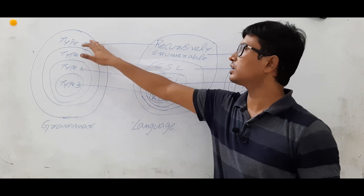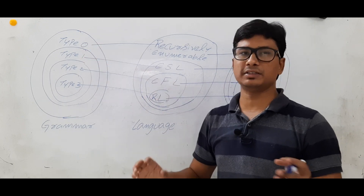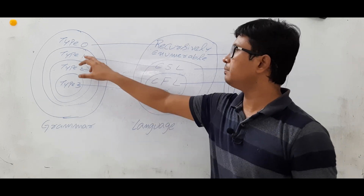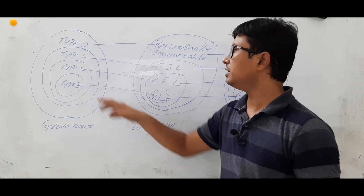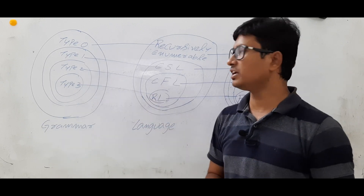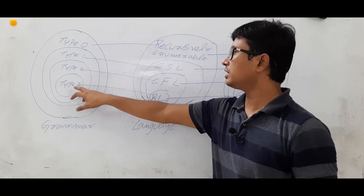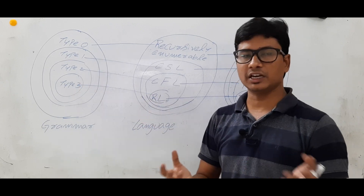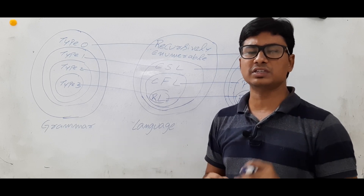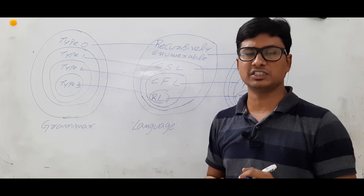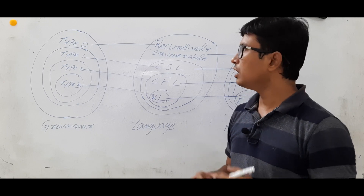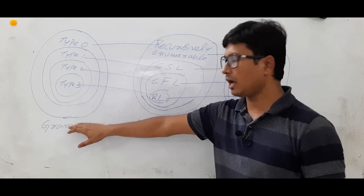Type 0 grammar is an unrestricted grammar, type 1 is a context-sensitive grammar, type 2 is a context-free grammar, and type 3 is a regular grammar. We have discussed what rules and restrictions exist in each grammar type.